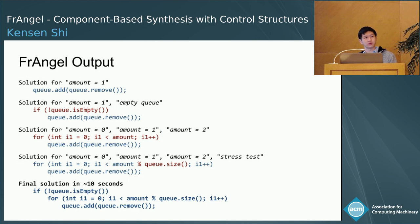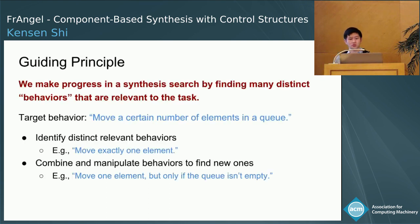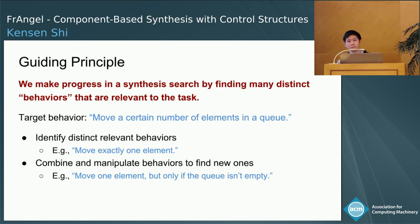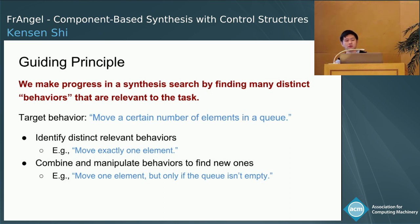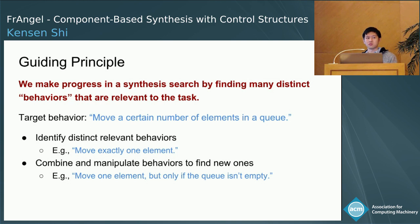Now I'll describe how Frangel works, starting with a guiding principle: we make progress in a synthesis search by finding many distinct behaviors that are relevant to the task. In the rotateQ example, it was easy to move exactly one element—this simple behavior isn't exactly what we wanted, but is still very relevant. Frangel is able to combine and manipulate these behaviors to find new ones. For instance, we can put the move-one-element behavior inside an if statement to create a new behavior: move one element but only if the queue isn't empty. By finding more distinct relevant behaviors, we increase our chances of discovering the target behavior.